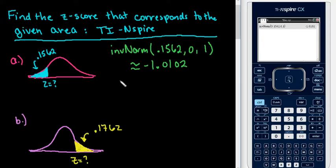Typically with a z-score, they only want two decimal places, so we would just round it to negative 1.01, but the advantage to using technology over the table is that you can get more decimal places in technology than you could in the table.